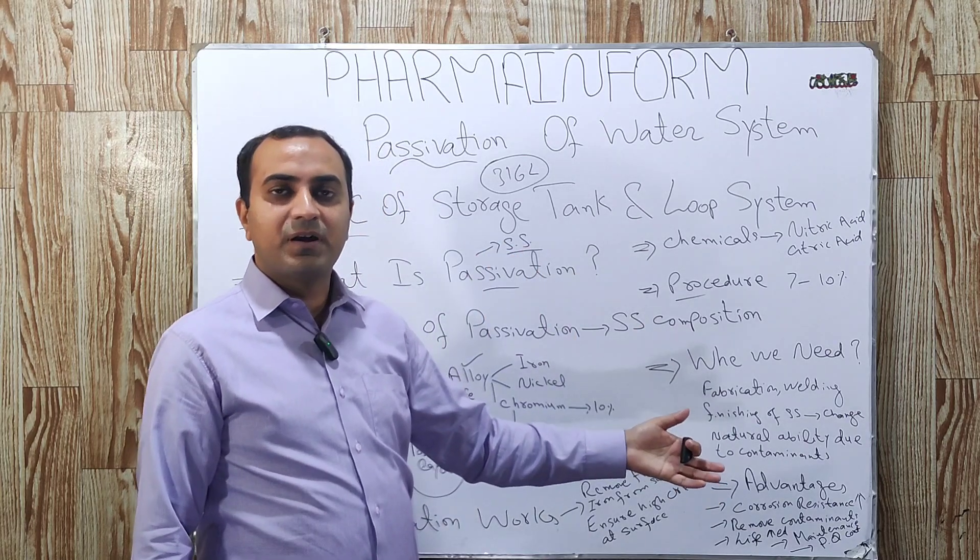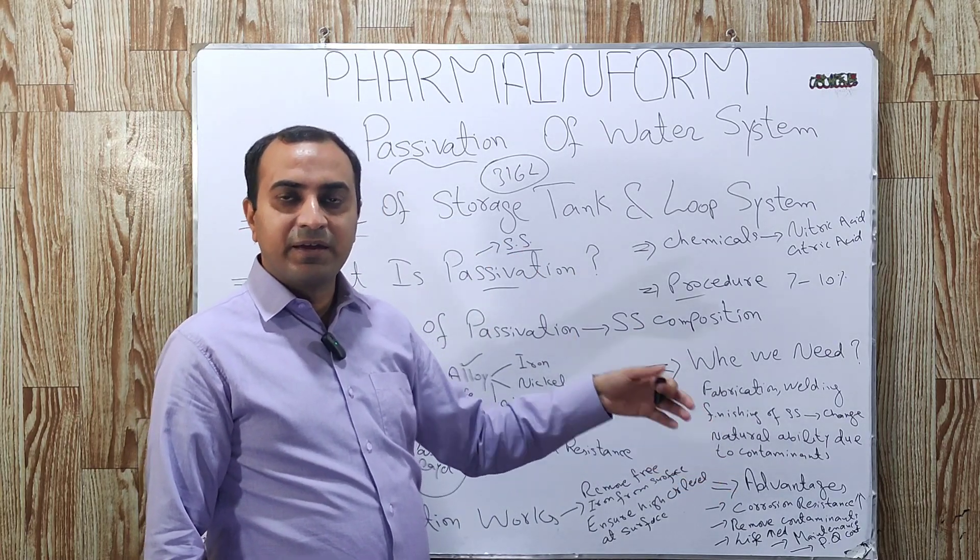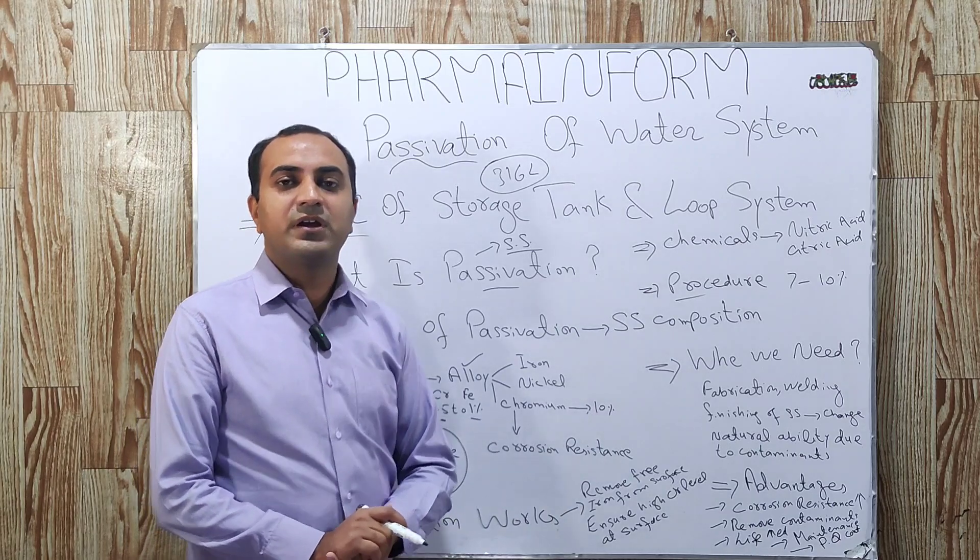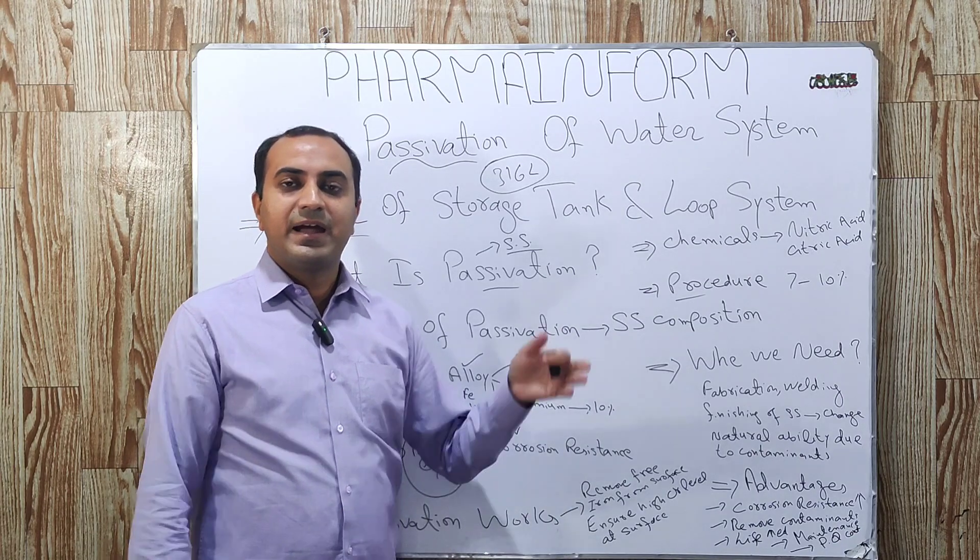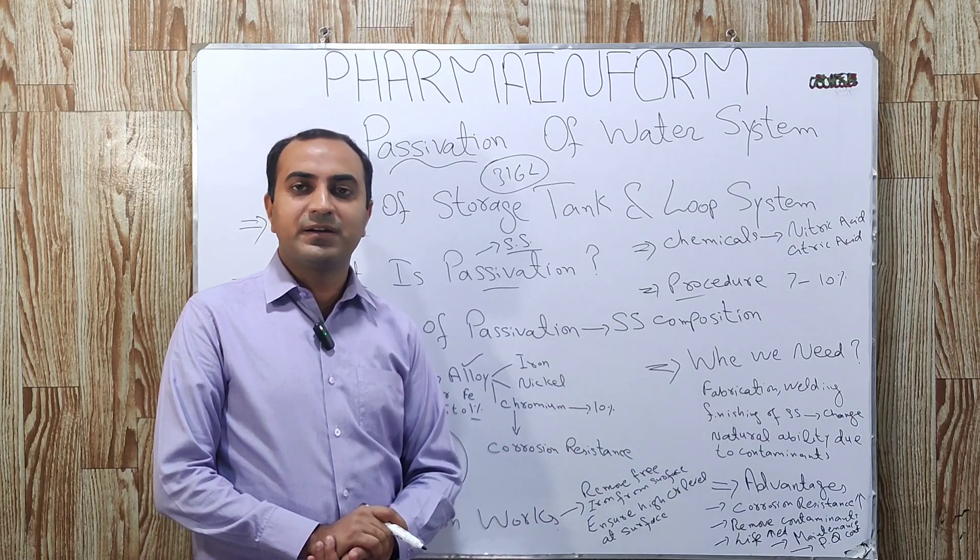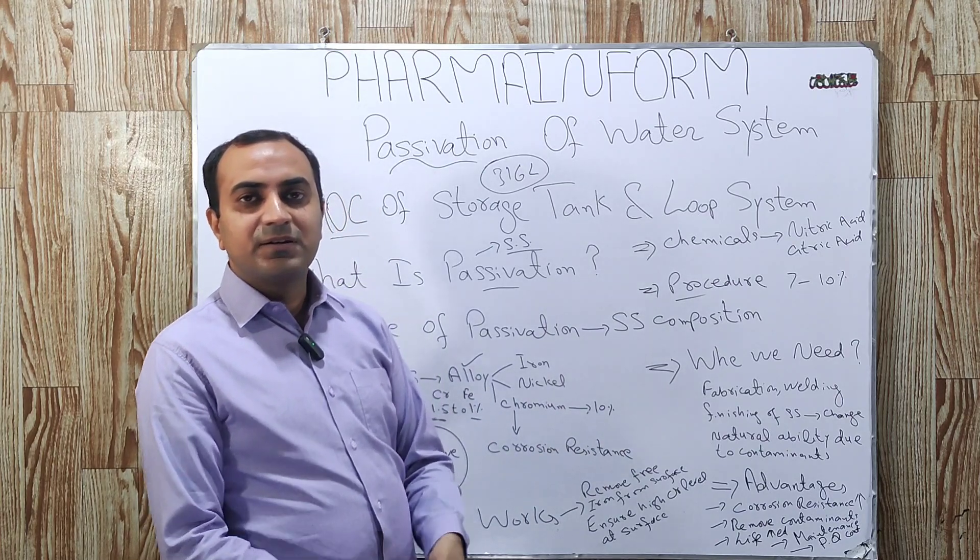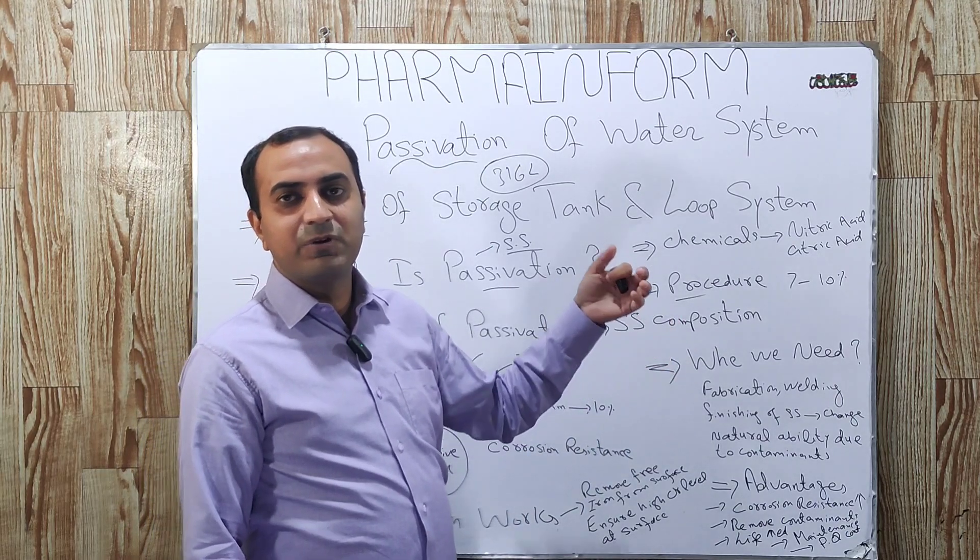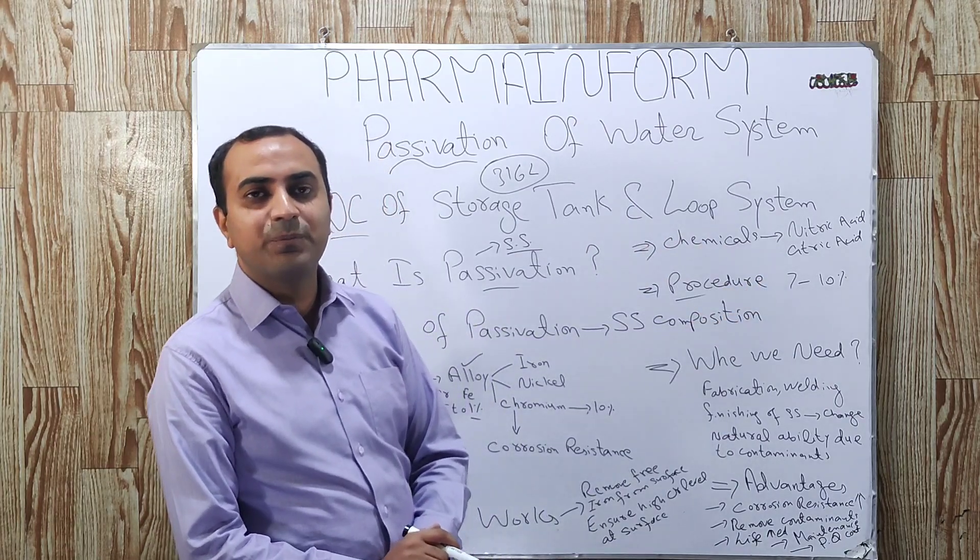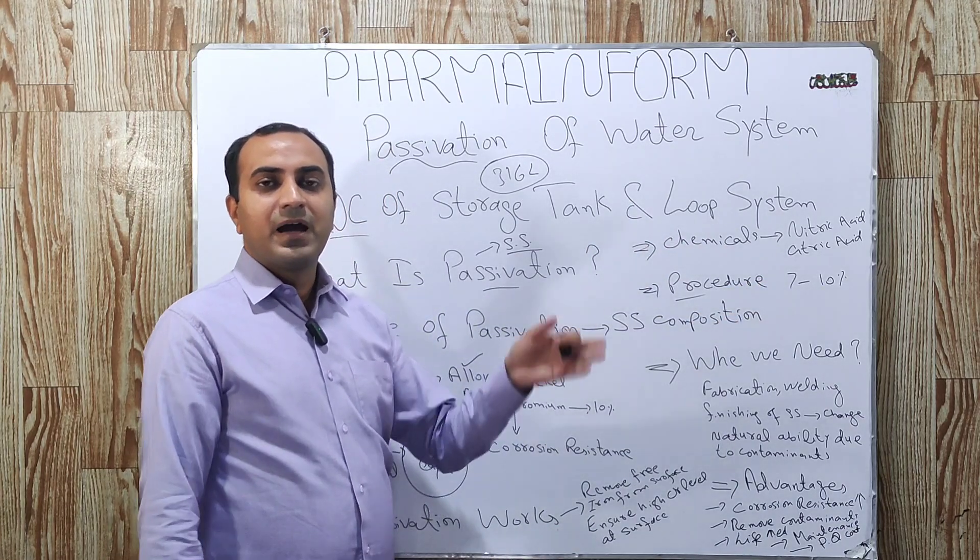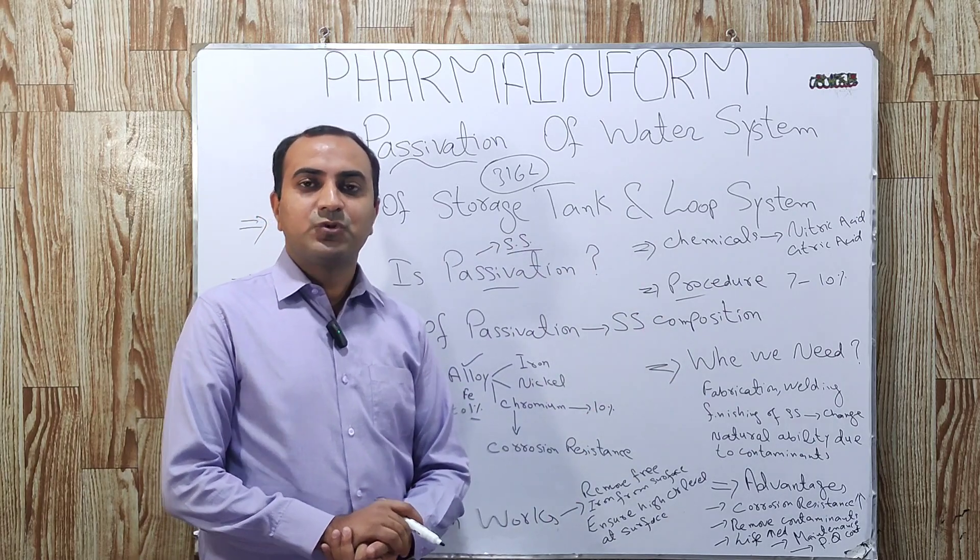After 1 hour, we discard this water and again fill it with water and circulate it again for 30 to 60 minutes and again check its pH and conductivity. The pH and conductivity of this water must be equal to the feed water and if the pH is according to the ranges, our passivation process is completed.